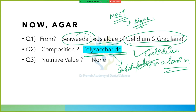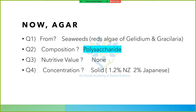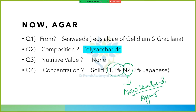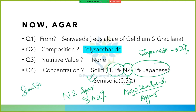Regarding agar concentration: New Zealand agar is 1.2% — remember this. Japanese agar is 2%. Semisolid agar concentration is 0.5%.